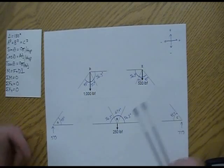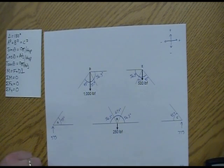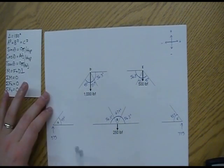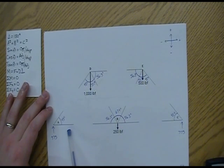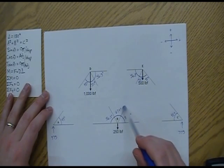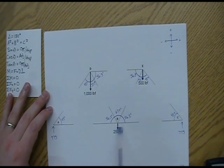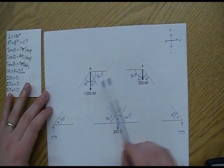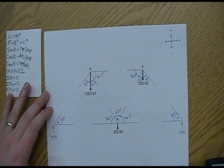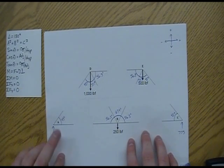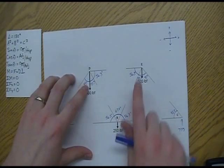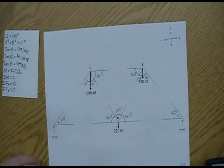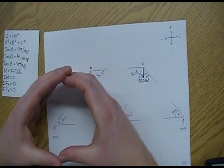You want to look at your free body diagram and find where the least amount of unknowns are — an unknown is simply a member we don't have a number for. Pin A has two unknowns, pin B has four unknowns, pin C has two, pin D has three, and pin E has three. So we're going to start at pin A, which has the fewest unknowns.